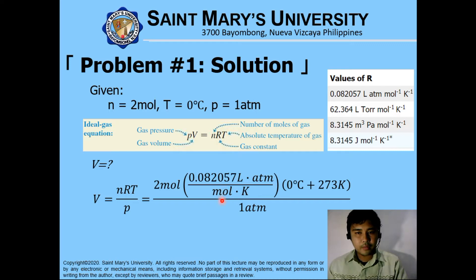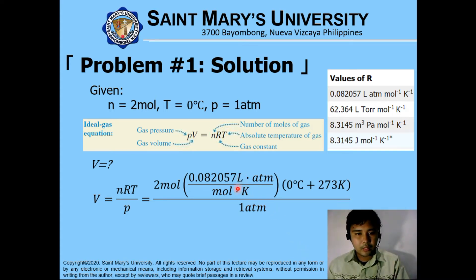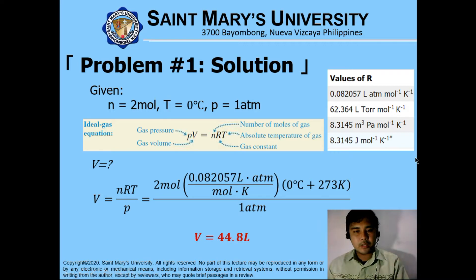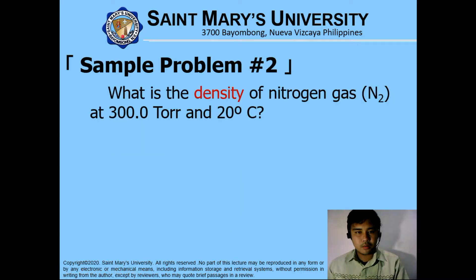Liter atmosphere multiplied by mole Kelvin — so the mole part can be cancelled. Similarly, the atmosphere part will be cancelled, and the conversion for temperature to Kelvin will cancel. Our answer, the remaining unit is the liter part. So the volume is actually 44.8 liters. The key here is that the standard pressure of a gas is 1 atmosphere and the standard temperature is 0 degrees Celsius.